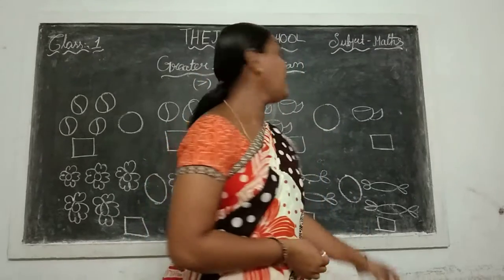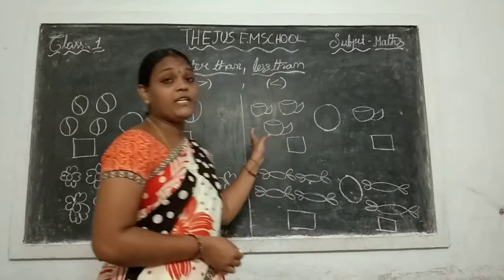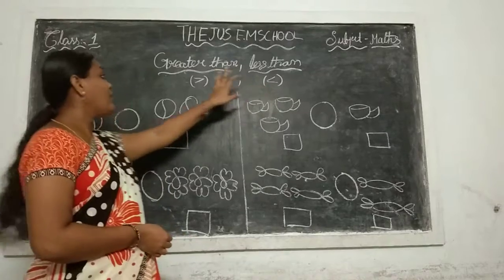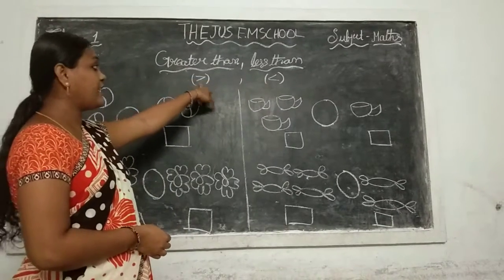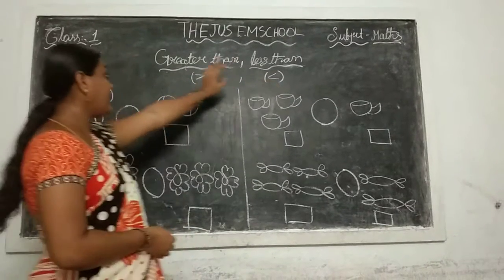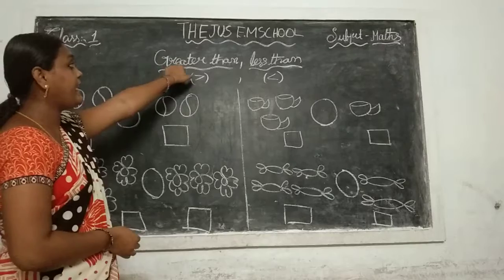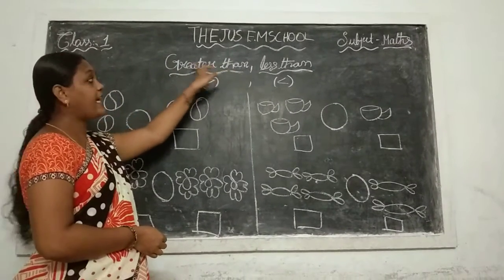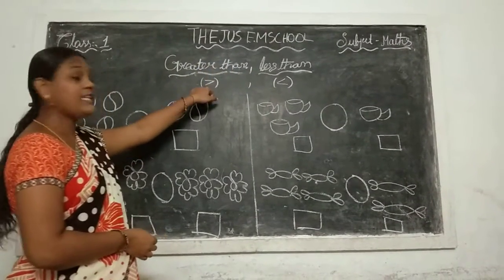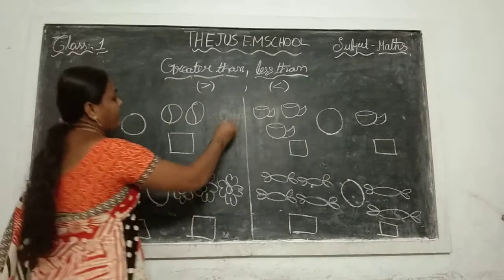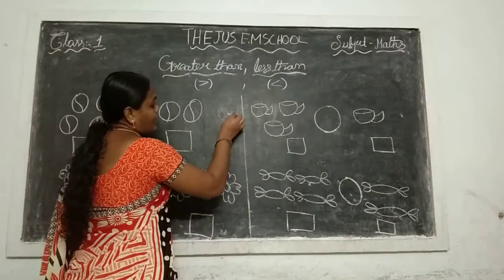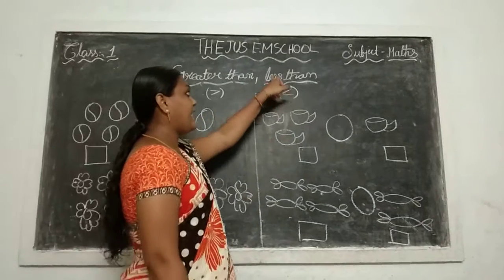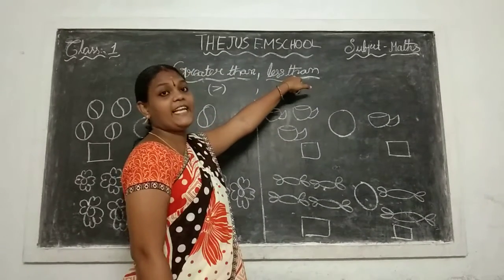Hi children, good morning. Coming to our next class. See here — what is this symbol? Greater than and less than. See here the spelling: G-R-E-A-T-E-R, greater. T-H-A-N, than. Greater than. And less than: L-E-S-S-T-H-A-N, less than.